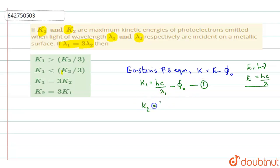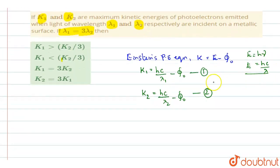Similarly, write it for K2. You will get it as H C by lambda 2 minus phi 0. Call it equation 2. Now you need a relation between K1 and K2, right? So you will take K1 minus K2. That is 1 minus 2 when you are taking equation 1 minus equation 2. So K1 minus K2 will be equal to, phi naught gets cancelled, so you will be retained with H C into 1 by lambda 1 minus 1 by lambda 2.